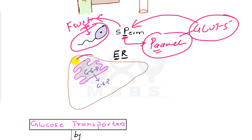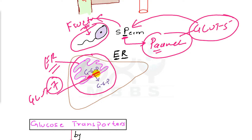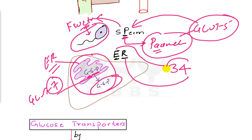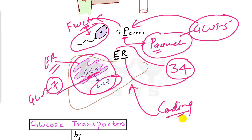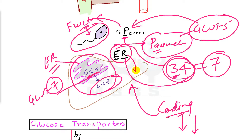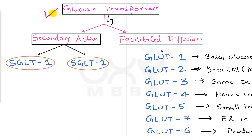On the endoplasmic reticulum of hepatocytes, GLUT7 is present for the transport of glucose-6-phosphate from the endoplasmic reticulum into the cytoplasm. The coding for E is 3 and the coding for R is 4 — if you don't know these codings, watch the separate video on mnemonics. When you add 3 and 4, you get 7, which confirms that the endoplasmic reticulum of hepatocytes has GLUT7.